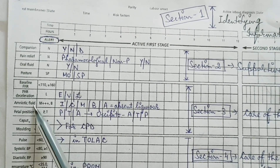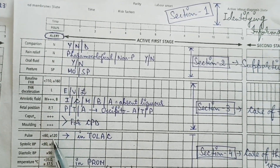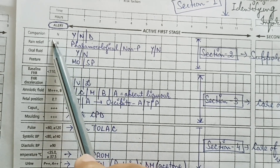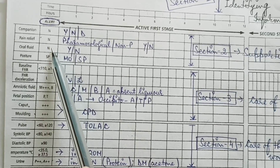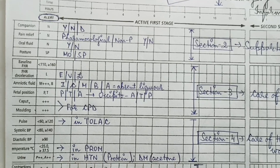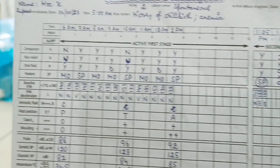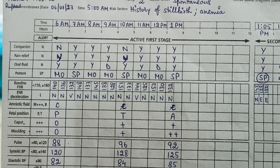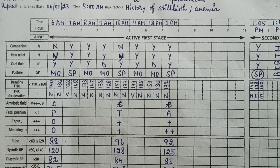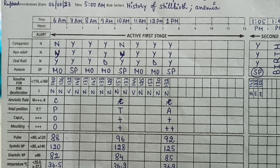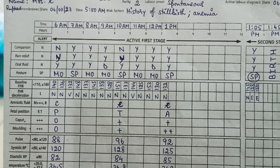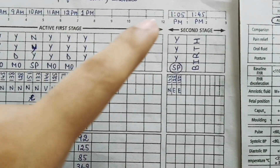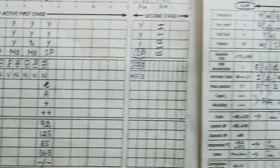There is a column called the alert column. Whatever is plotted in the alert column is what is not expected — if no companion is allowed, no pain relief is given, no oral fluid is allowed, or the posture is supine, these are not expected. In the example, Mrs. X was initially not allowed companionship, but at 7am and 8am companionship was allowed. Pain relief was given at all times. Oral fluids were generally given, though the patient declined at 9am and 12pm. Her posture was almost always mobile, with occasional supine positioning in the second stage when she was fully dilated.